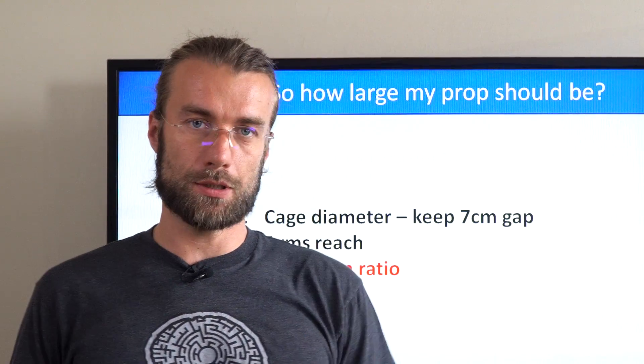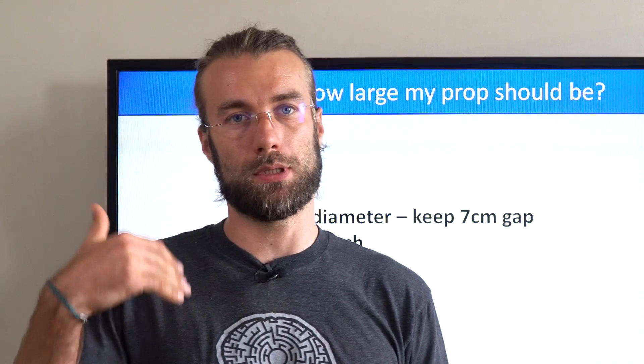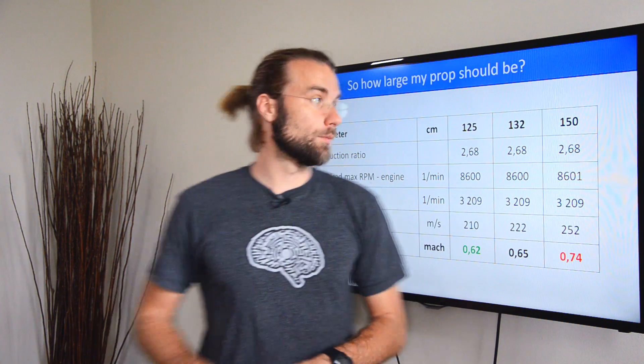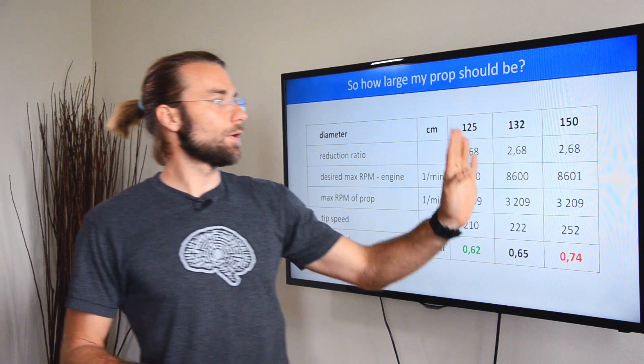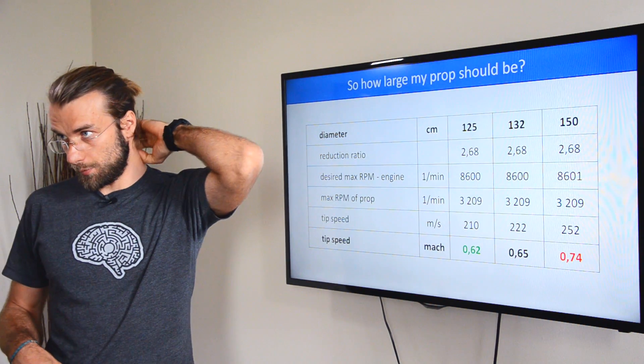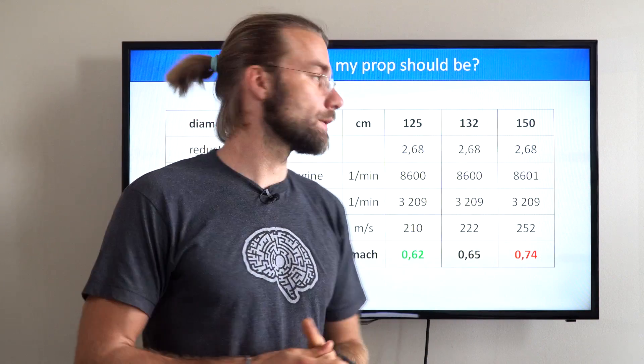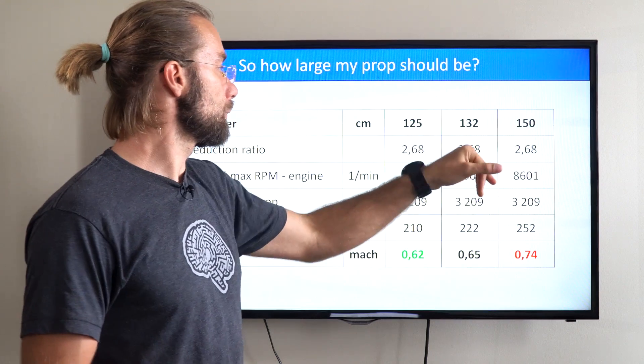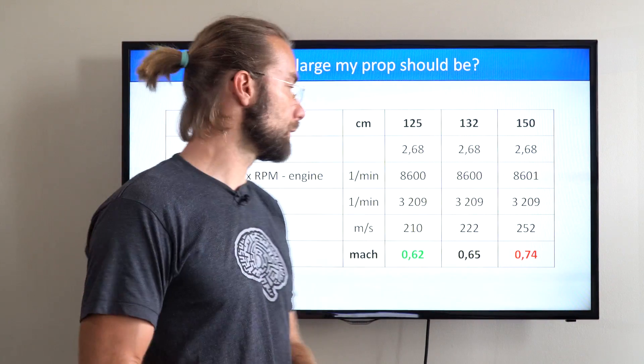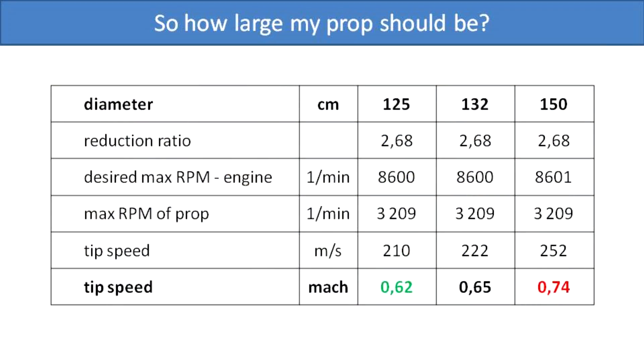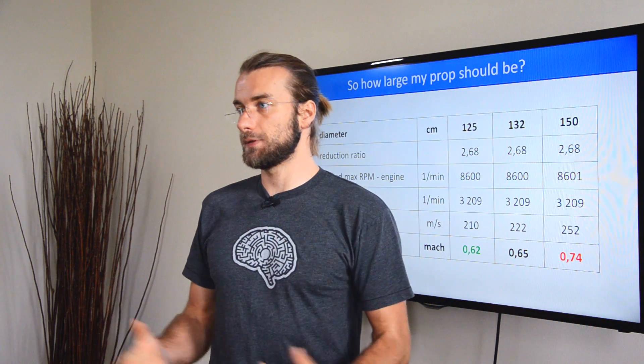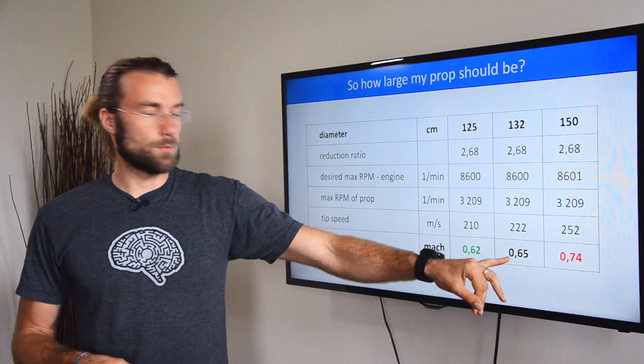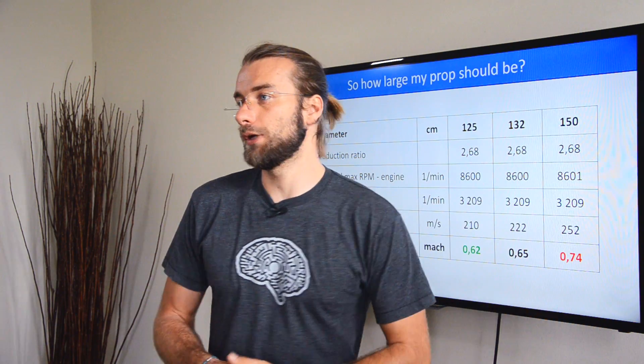Now, a very important thing to consider is the reduction ratio, because that determines how fast the propeller rotates. Let's assume these three examples: 125 cm, which is sort of industry standard, 132, and an extreme value 150 cm propeller. This is an example on the Vittorazi Moster Plus engine. With a reduction ratio of 2.68 and the maximum RPM on the engine 8600, you get roughly 3200 RPM on the propeller. So with a 125 cm prop, the tips will rotate at a speed of 0.62 speed of sound. With 132, it's already 0.65, and with a 150, it would be way over 0.7.